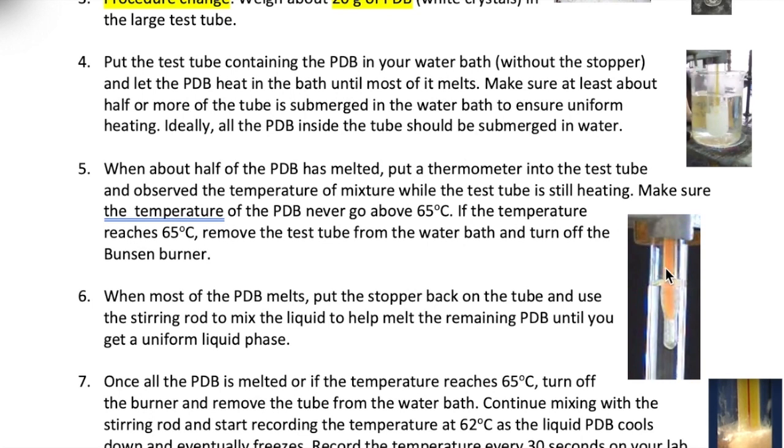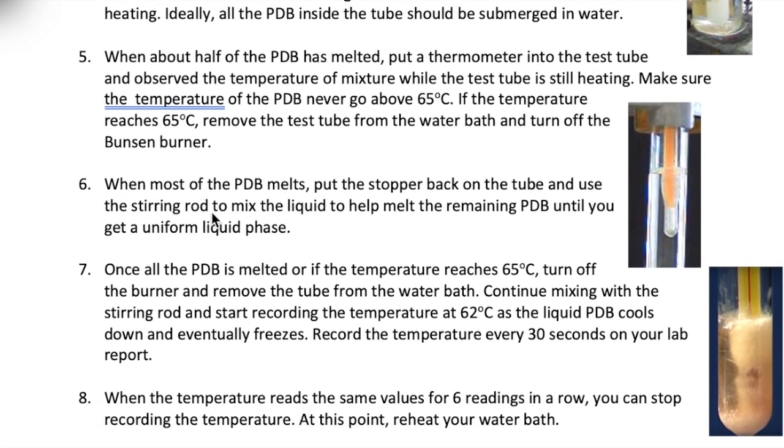Insert a thermometer into the test tube and observe the temperature of the PDB mixture. The temperature should be below 65 degrees Celsius at this point. Keep heating and observing the temperature. If it ever goes above 65 degrees Celsius, remove the test tube from the water bath and turn off the Bunsen burner. Heat until all of the PDB has melted or until the temperature reaches 65 degrees Celsius, whichever comes first.